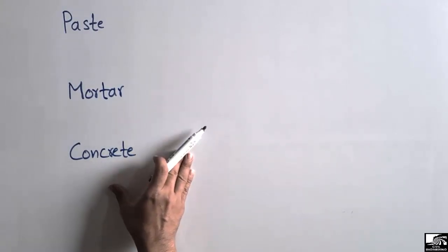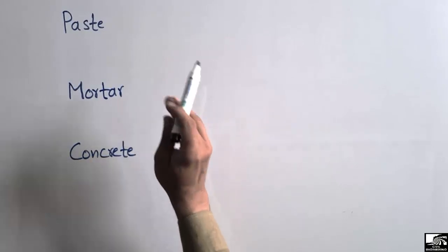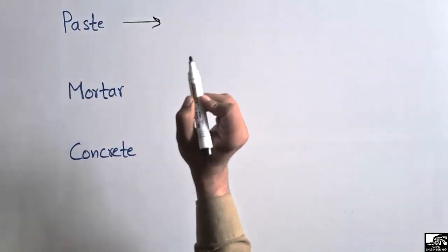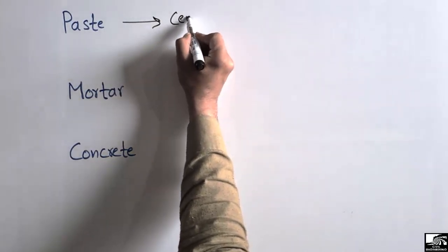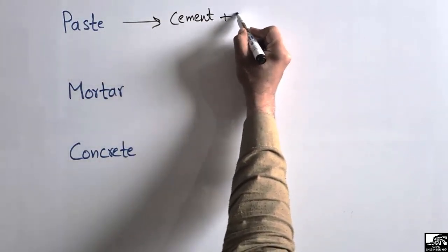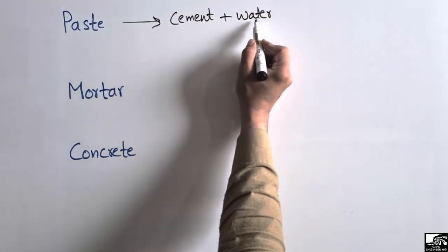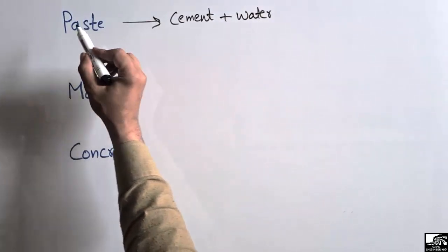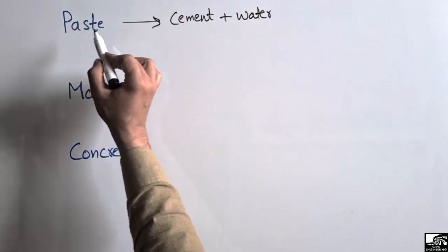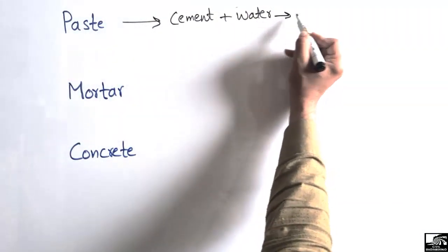The difference between these three types of material is based on their ingredients. The paste consists of just cement and water — it is simply the combination of cement and water. This combination gives us the paste, sometimes also known as cement paste.